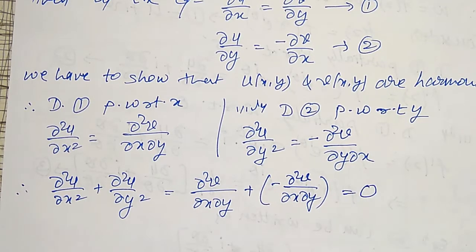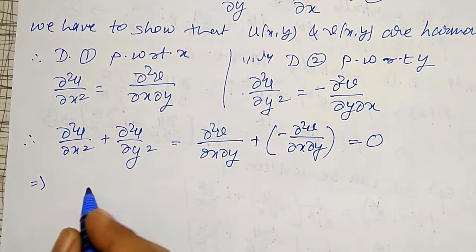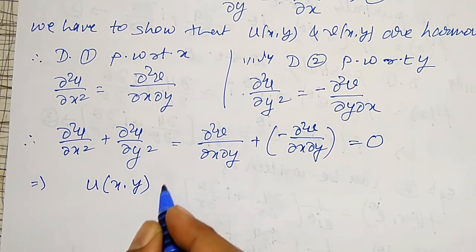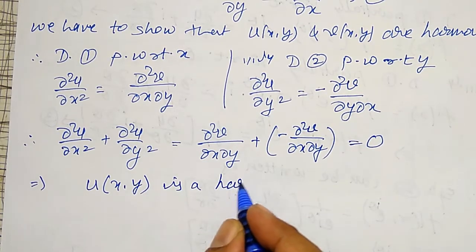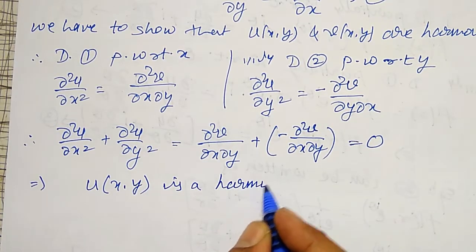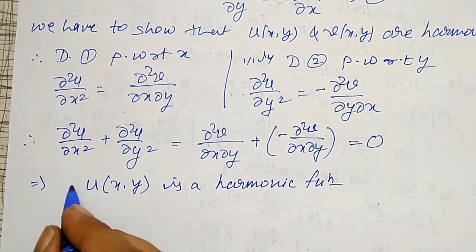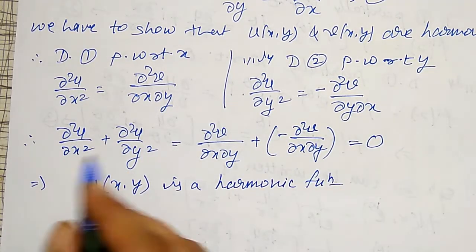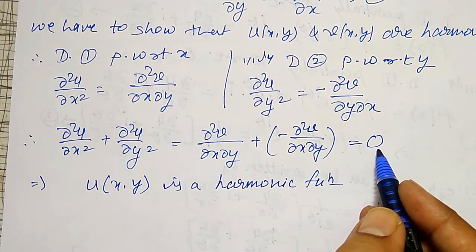Since dou²v/dou x dou y = dou²v/dou y dou x (mixed partials are equal), these two terms cancel, giving dou²u/dou x² + dou²u/dou y² = 0. This implies u(x,y) is a harmonic function, because it satisfies the condition dou²u/dou x² + dou²u/dou y² = 0.